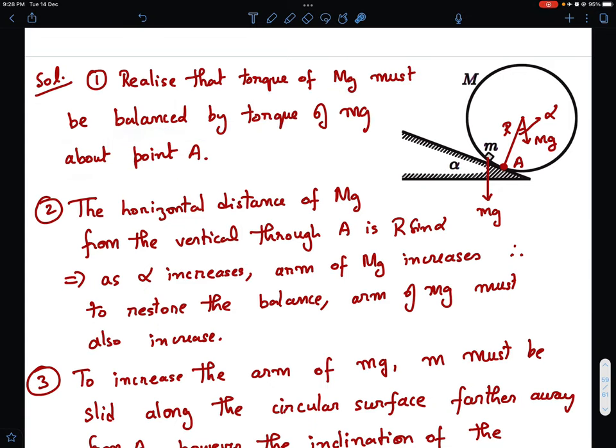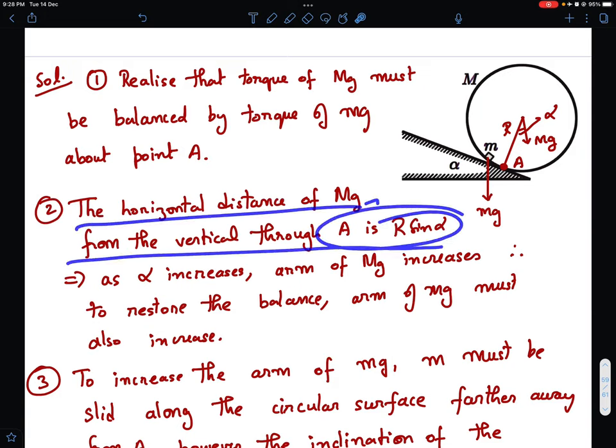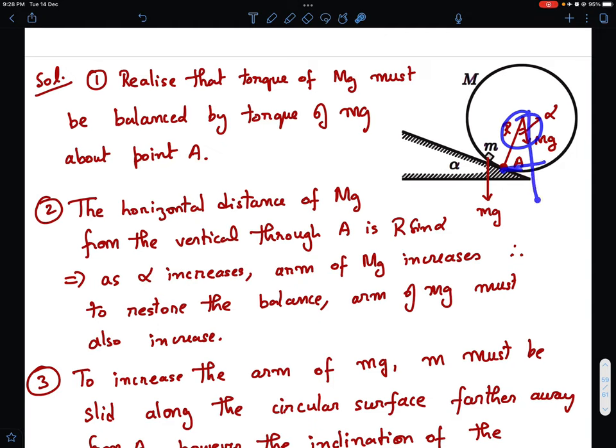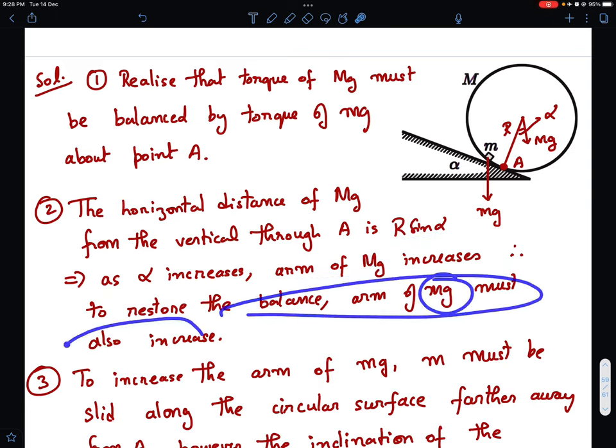Now think what will happen as you increase the inclination? What will happen to the torque of capital Mg? As you increase the inclination, the distance between the point A and the vertical passing through the center of the cylinder, that distance is R sin alpha. So horizontal distance of capital Mg from vertical through A is R sin alpha. So as you increase alpha, this horizontal distance will increase. So as alpha increases, arm of capital Mg increases. Therefore, to restore the balance, arm of small mg must also increase.